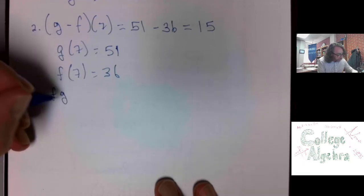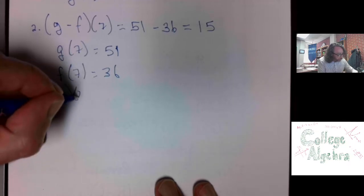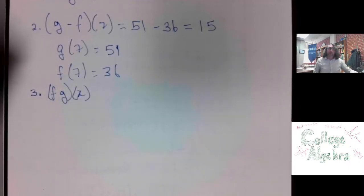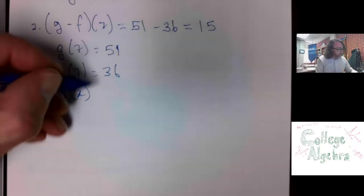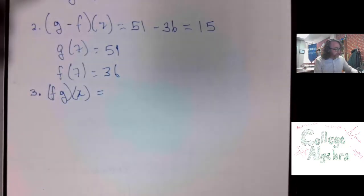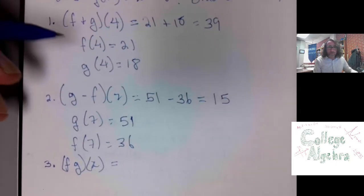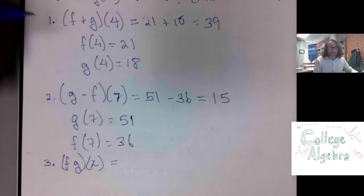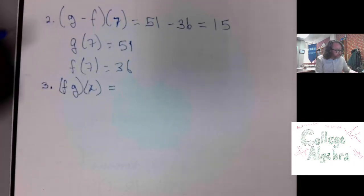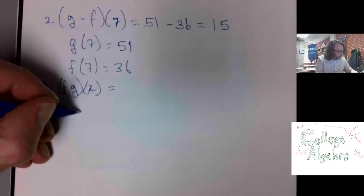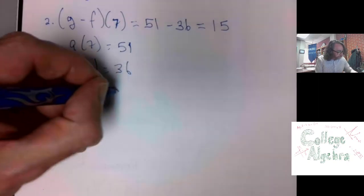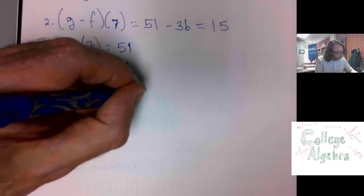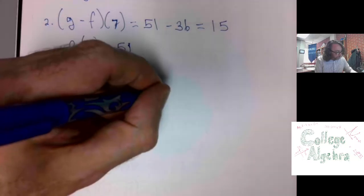Let's do f times g of x. Usually, we don't even write anything in the middle when we're doing a multiplication. You'll see why in the next video on function composition. Now, in the previous two examples, we were given a specific numerical input. And here, the input is a variable. So, what I do is I take f of x, which is 5x plus 1, and g of x, and I multiply them.